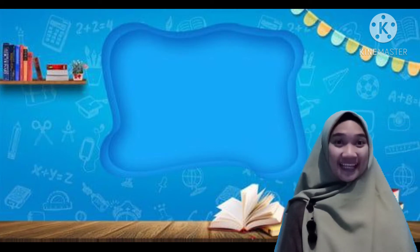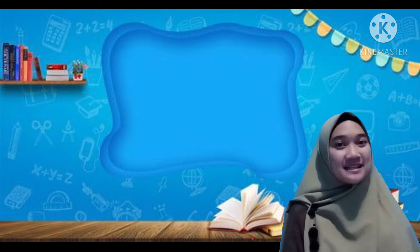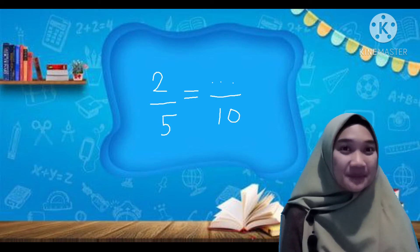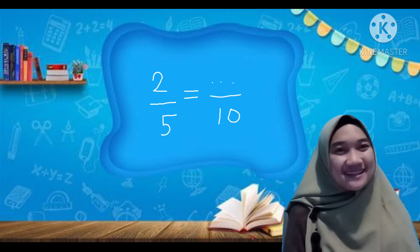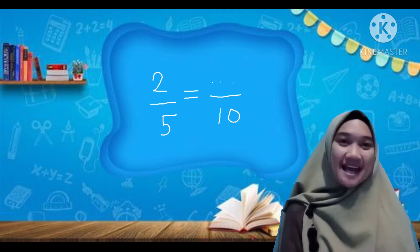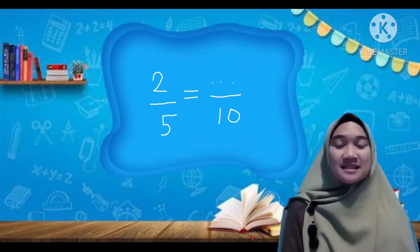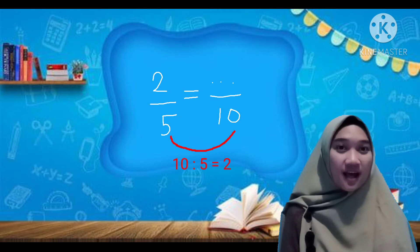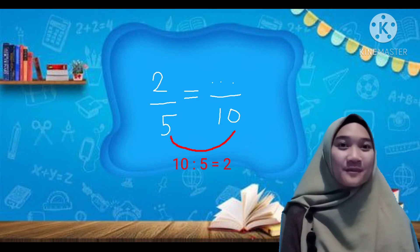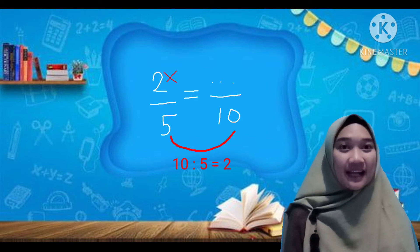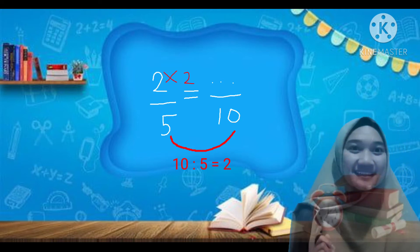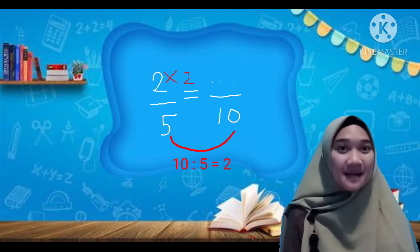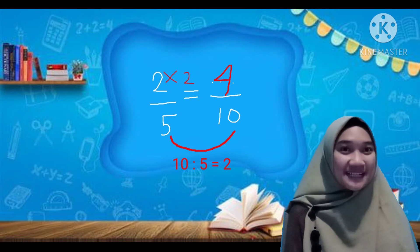Tadi kita sudah menentukan pecahan senilai dari 2 per 3. Selanjutnya, bagaimana jika soal seperti ini: 2 per 5 sama dengan titik-titik per 10. Caranya yaitu dengan 10 dibagi dengan 5. 10 dibagi 5 sama dengan 2. Pembilang angka 2 tadi dikalikan dengan 2. 2 dikali dengan 2 sama dengan 4. Jawabannya yaitu 4 per 10.